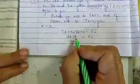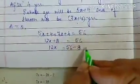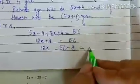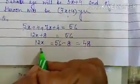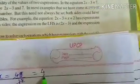So 12x equals, transpose 8 first, then you will get 56 minus 8 is 48. So x equals 48 divided by 12, that is 4.